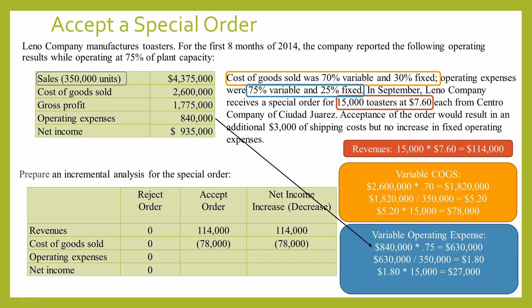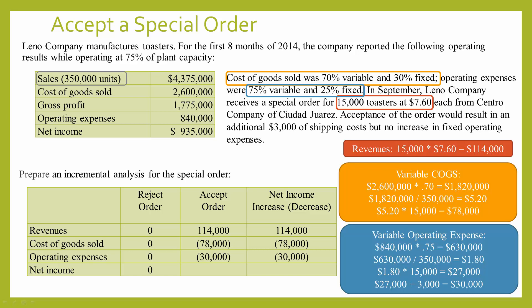There's one more piece of information: the order would require $3,000 of additional shipping costs, and note that that's a total, not a per-unit number. So we add $3,000 to the $27,000 to determine that total variable operating expenses would be $30,000 if we accept this order. We have zero operating expenses if we reject, and $30,000 additional if we accept, which has a negative impact on net income.